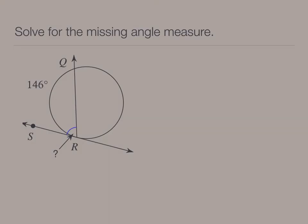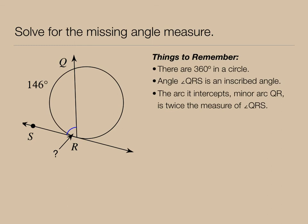Next example, we're going to solve for a missing angle measure. Remembering there's 360 degrees in a circle, that QRS is an inscribed angle, that minor arc QR is the arc it intercepts, which is twice the measure of the inscribed angle. Therefore, if arc QR is 146 degrees, the measure of angle QRS would be half that, or 73 degrees.